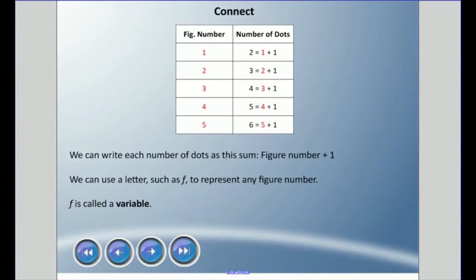The figure number plus one always seems to give us the answer. I'll put this table back so you can see it easily. We can write each number of dots as a sum — remember, the sum is the answer when we add. So the pattern is the figure number plus one. We can use a letter such as F to represent any figure number. I chose F because it could stand for 'figure.'